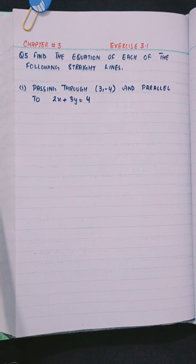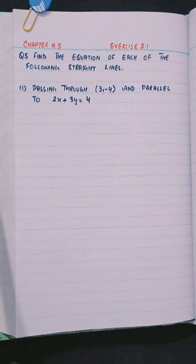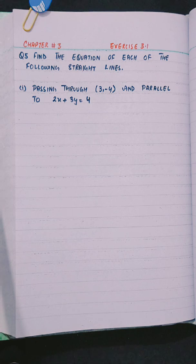Hello everyone, this is Rabia Islam. In this video we will solve question number 5 from exercise 3.1, chapter number 3. The question is: find the equation of the following straight lines. Part 1 is passing through (3, -4) and parallel to 2x + 3y = 4.